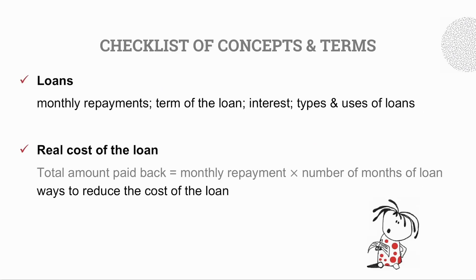In Loans Part 1, we looked at monthly repayments of loans, the term of the loan, interest types, and uses of the loans. We also explored the real cost of the loan, where the total amount paid back is equal to the monthly repayment times by the number of months of the loan, and we looked at ways to reduce the cost of the loan.